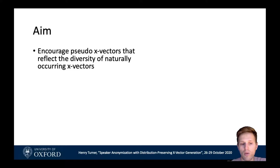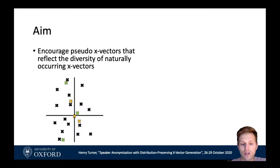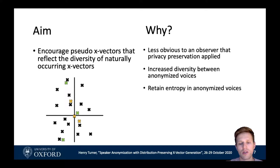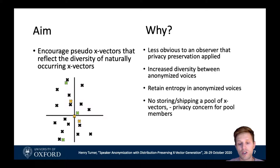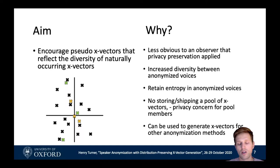This gives us the aim of our work: to encourage pseudo x-vectors that reflect the diversity of naturally occurring x-vectors. So for three original x-vectors we might get three generated ones with no dependence between the original and pseudo positions. This makes it less obvious that privacy preservation has been applied and thus less likely that an attacker would investigate. It also increases diversity between anonymized voices, making it easier to tell two anonymized voices apart. This retains entropy in anonymized voices. An added benefit is that we no longer need to ship a pool of x-vectors — we can just ship our generator model, alleviating privacy concerns of those in the pool. Our technique also works in conjunction with other anonymization methods that use x-vectors as a component.